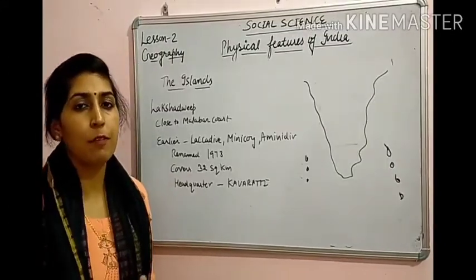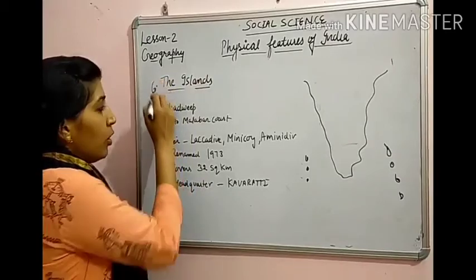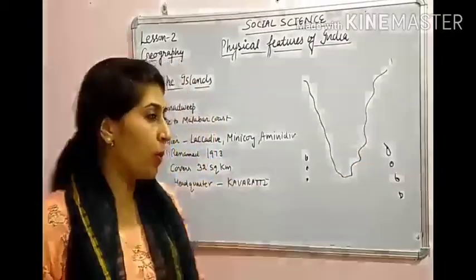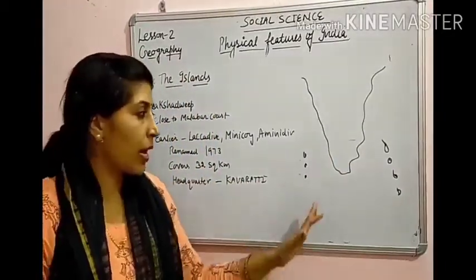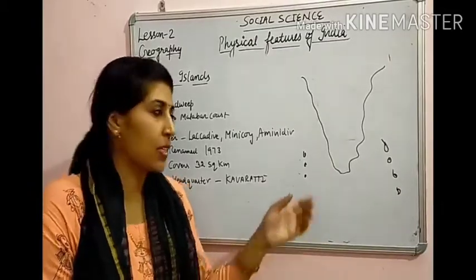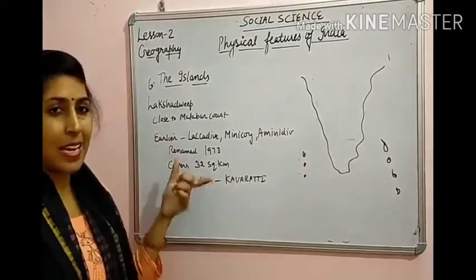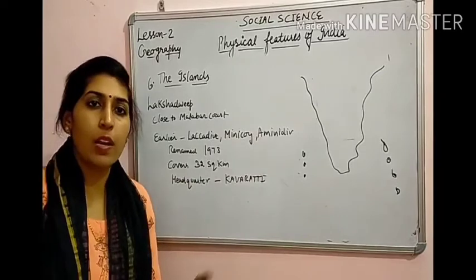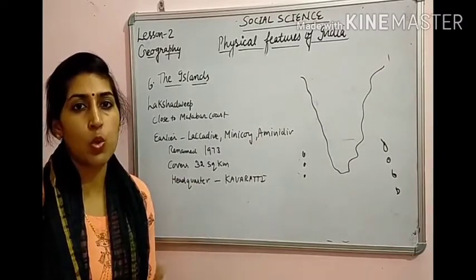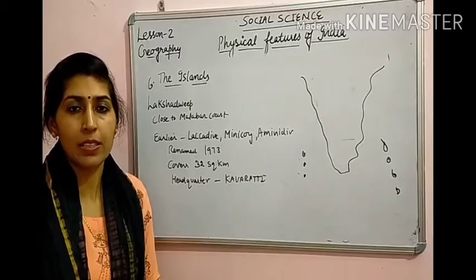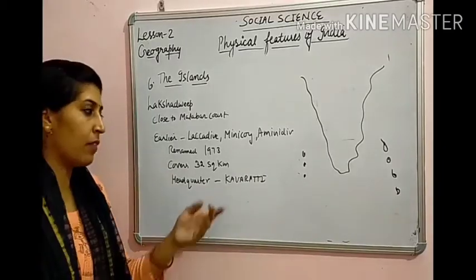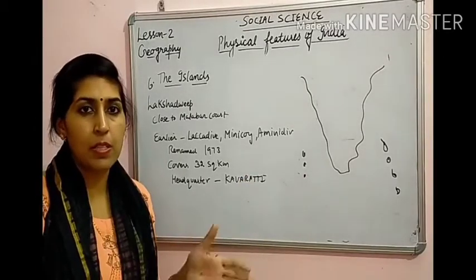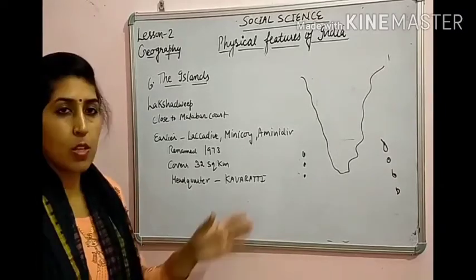The last physical feature of India is the Islands. Arabian Sea में Lakshadweep है and Bay of Bengal में Andaman and Nicobar। Lakshadweep, Kerala coast से 280 to 400 km की दूरी पर है। इसका पहले नाम Laccadive, Minicoy, Aminidivi था जो 1973 में change होकर Lakshadweep हो गया। यह 32 sq km area cover करता है और इसका administrative headquarter Kavaratti है।